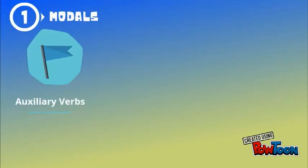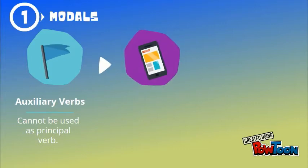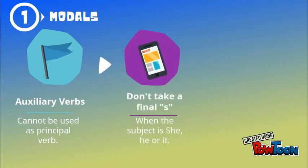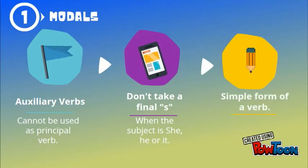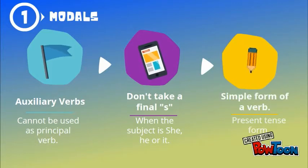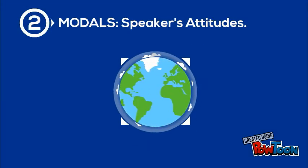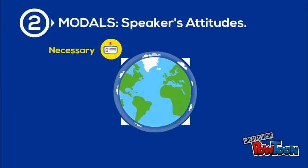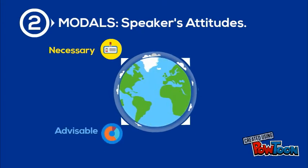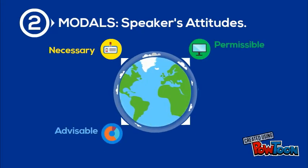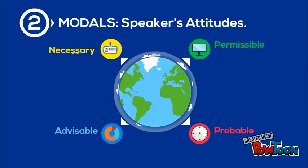Modals are auxiliary verbs that cannot be used as principal verbs. They don't take a final S when the subject is she, he, or it, and they are followed by the simple form of a verb. Also, modals express speakers' attitudes — for example, when something is necessary, advisable, permissible, and probable.